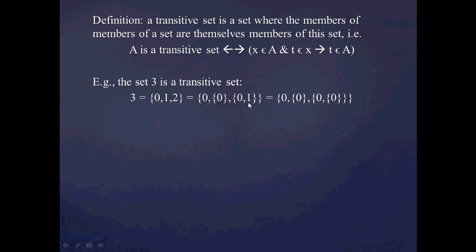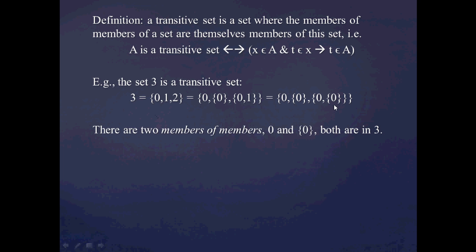Furthermore, I can rewrite 1 within it as well. So 3 is equal to this fully expanded set. Now notice that in this set, we have three members: 0, the set containing 0, and the set containing both 0 and the set containing 0. So we have three members here.